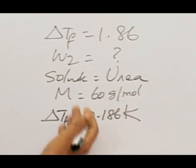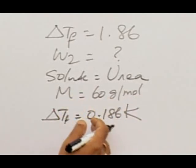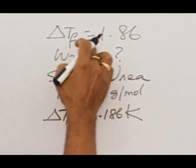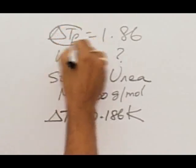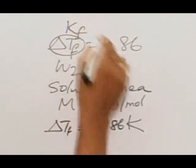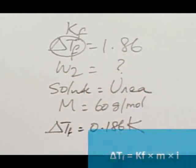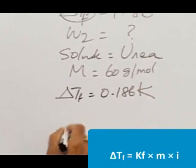delta Tf value, that is the depression of freezing point, is found to be 0.186 Kelvin. And we know very well, this is not Tf, this will be Kf, that is the cryoscopy constant. So Kf is equal to 1.86. So we can write that delta Tf is equal to Kf into m, and also the Van't Hoff factor for urea i takes the value 1.